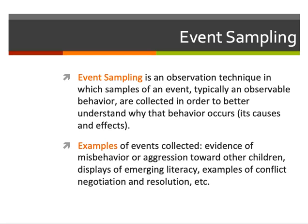Some examples — not all inclusive — of events that could be collected through event sampling: we could collect evidence of a child's misbehavior or aggression toward other children, or we could collect displays of emerging literacy skills, or we could collect examples of events in which the child positively and successfully resolved or negotiated conflict in order to arrive at a resolution.